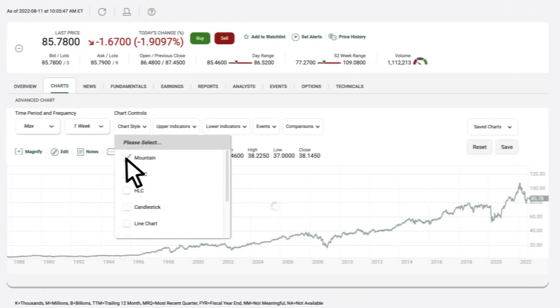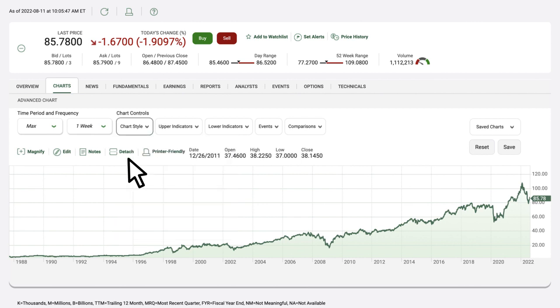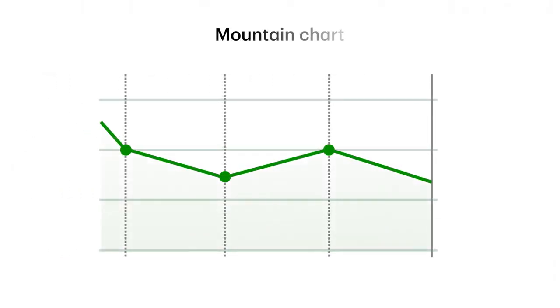The Mountain Chart is very similar to the Line Chart and has the same pros and cons. The only difference is the shaded area below the line, which makes the price action look like a mountain with peaks and dips.